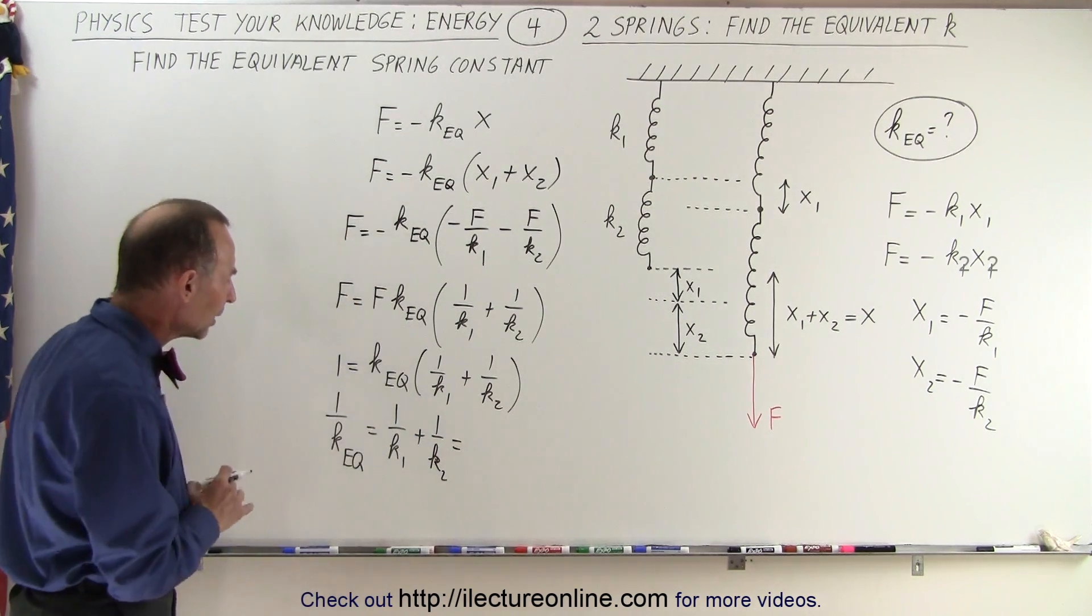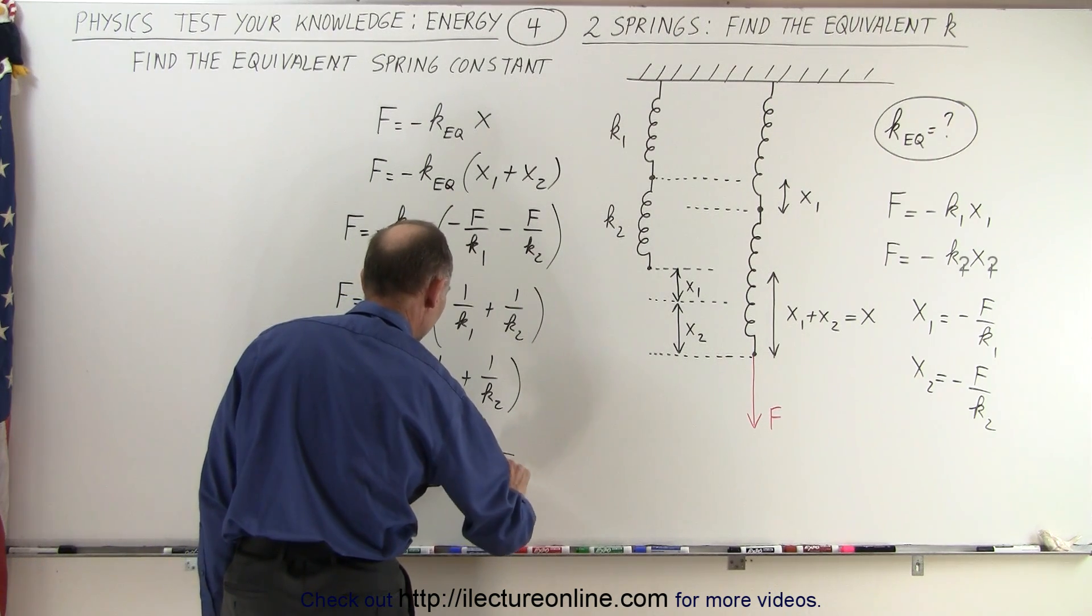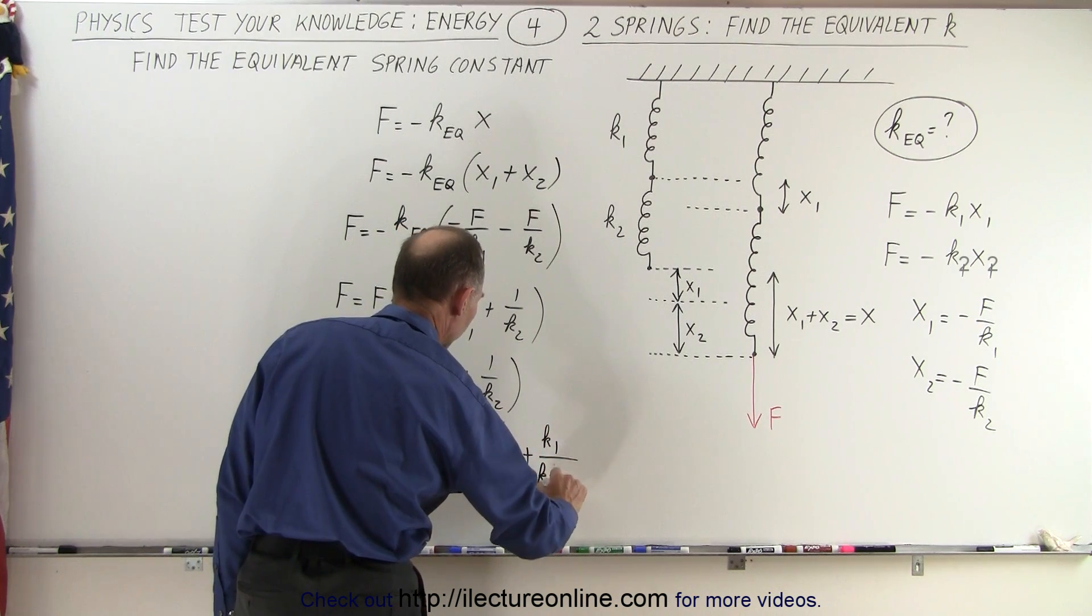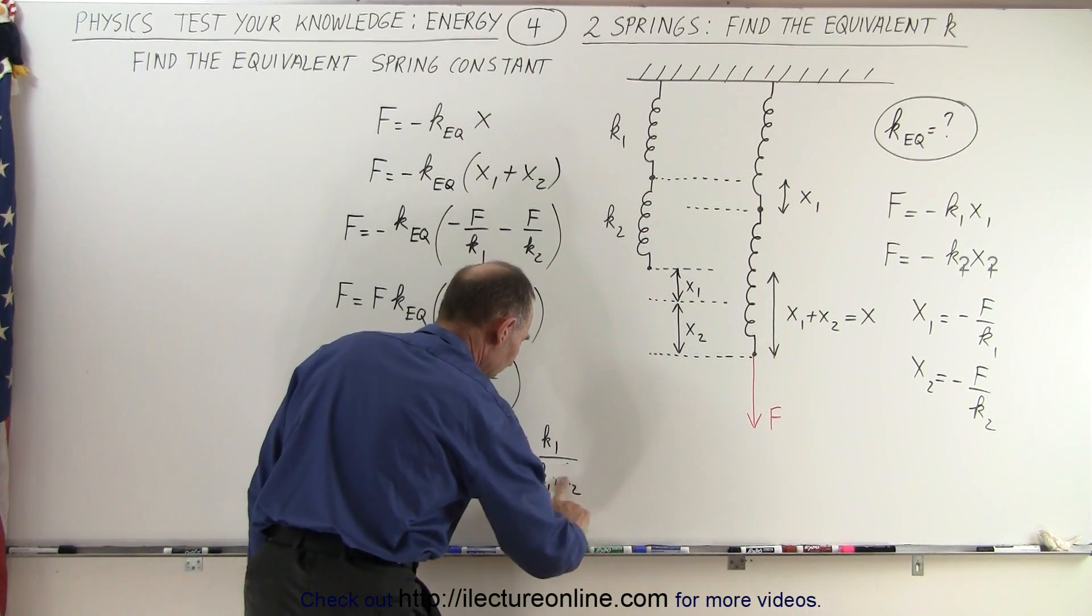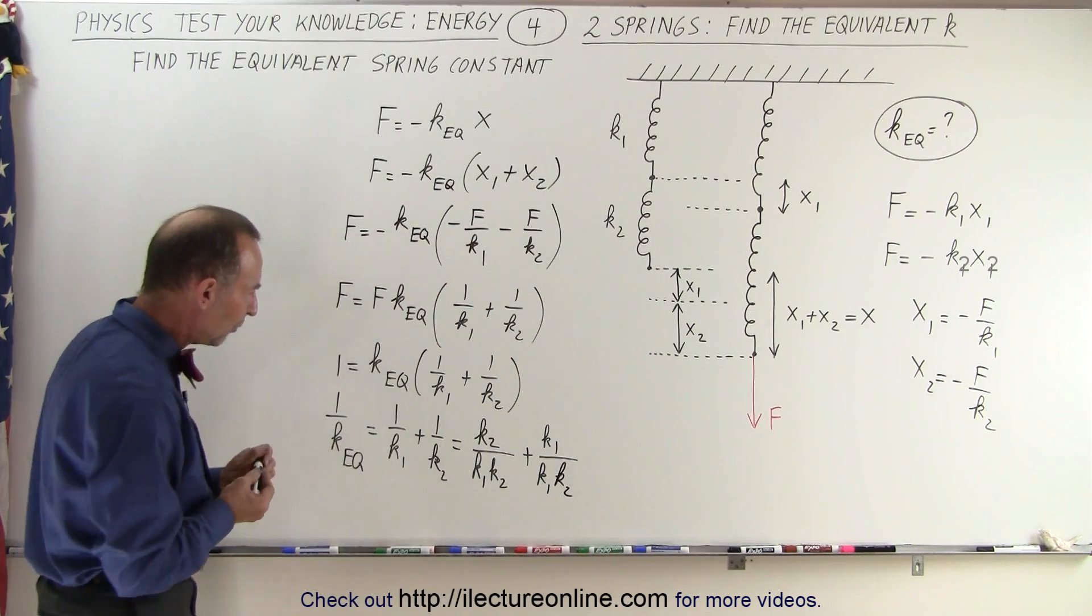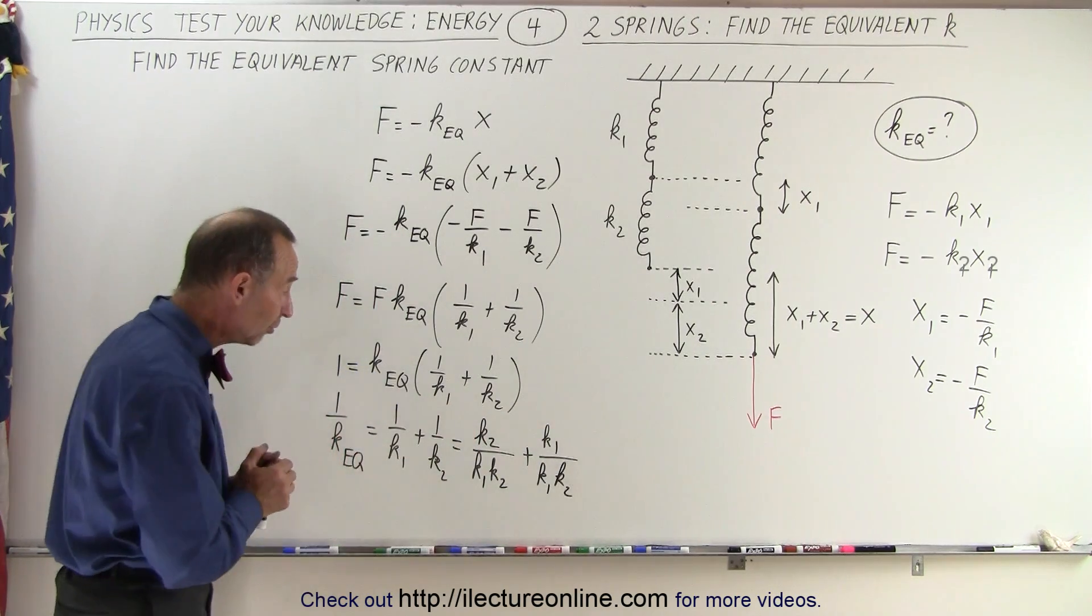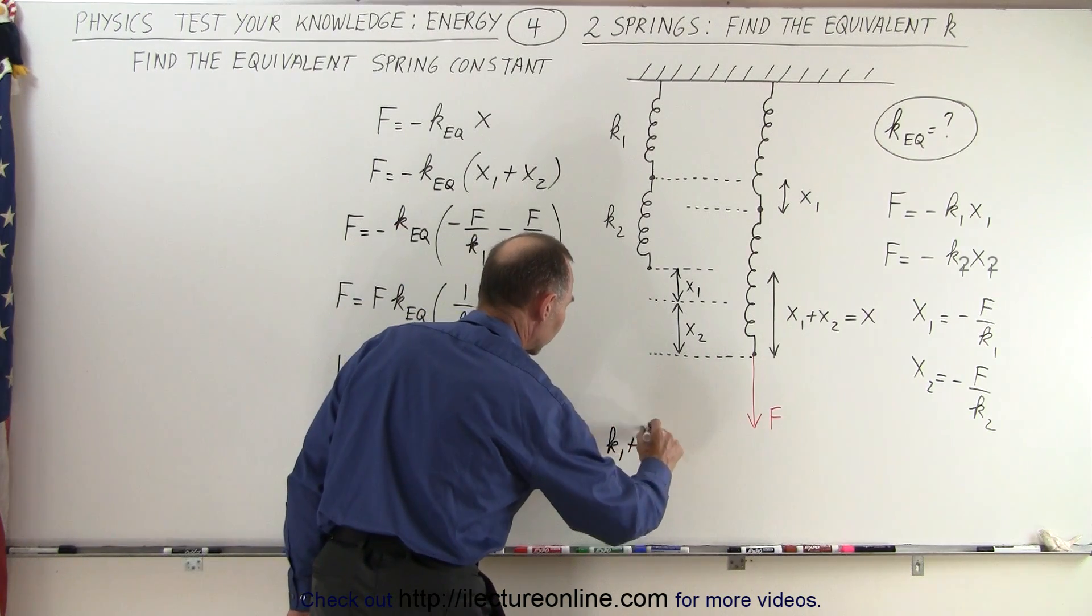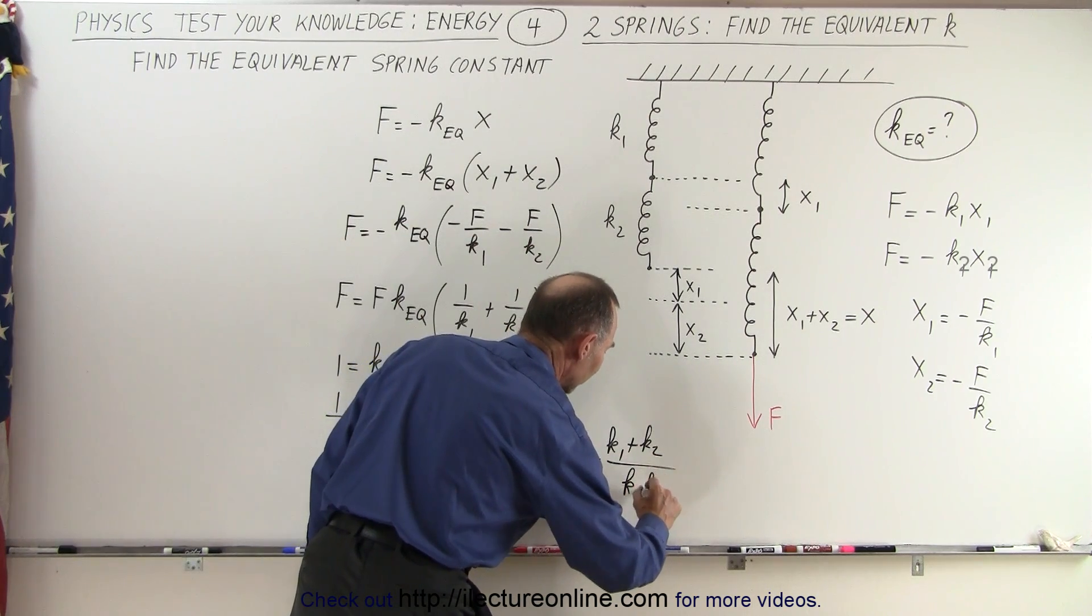So we're going to write that over a common denominator, so this is equal to k2 over k1 times k2 plus k1 over k1 plus k2, like this, oh not plus but times, so let me correct that, so times k2, there you go. So if we cancel out the k2s, we have 1 over k1, if we cancel out the k1s, we have 1 over k2, so so far so good. So we can sum that up over the same denominator, so this is equal to k1 plus k2, all divided by the common denominator of k1 times k2.